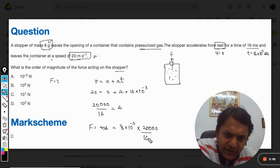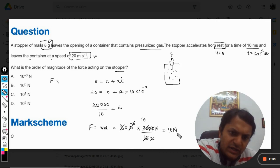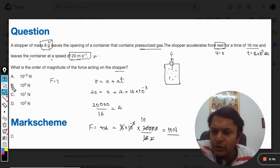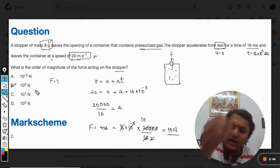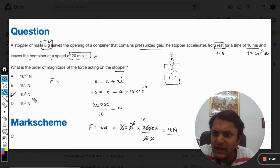This simplifies: 8 twos are 16, and it becomes 10. So our answer should be 10 Newtons. The answer will be C, 10 raised to power 1 Newton.